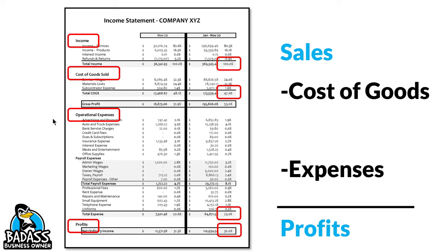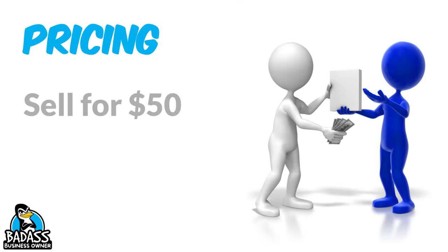If you're a small business owner, you might watch other videos and see a lot of other little lines. Trust me, at your size, you're not dealing with all those. The only things you really need to remember are: sales minus cost of goods minus expenses equals profits. When you start to hit the big time, we can teach you about the EBITDAs and all that other stuff — it's basically just this on steroids. But for now, the vast majority of what you do is sales minus cost of goods minus expenses equals profits.